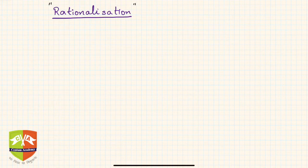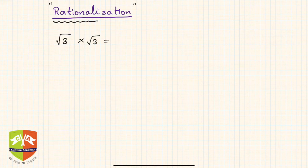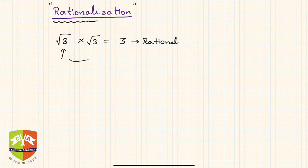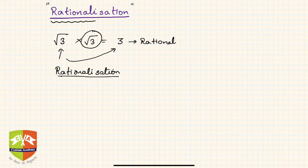As the name suggests, rationalization means you are converting something which is not rational into something which is rational — that's why the name rationalization. For example, if I have a surd like root 3 and I multiply it by another root 3, I get 3, which is a rational number. So this process of converting an irrational number into a rational number by multiplication with another surd is called rationalization.